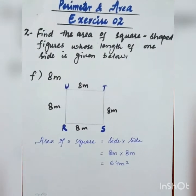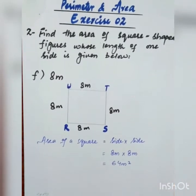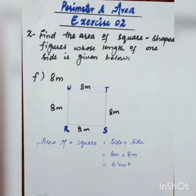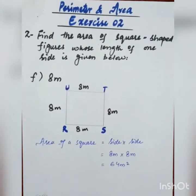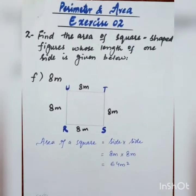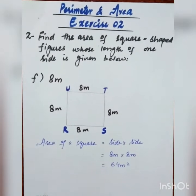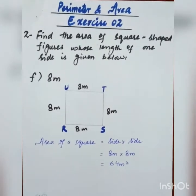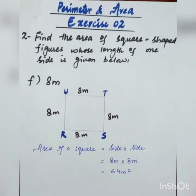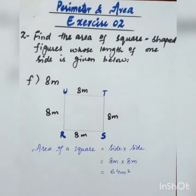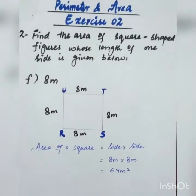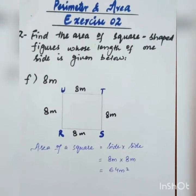Number 2: Find the area of a square shape figure whose length of one side is given. In a square, we have 4 sides and all sides are equal in length. The 4 sides have the length of 8 meters. Area of a square is equal to side into side: 8 meters into 8 meters. 8 eights are 64 meter square.